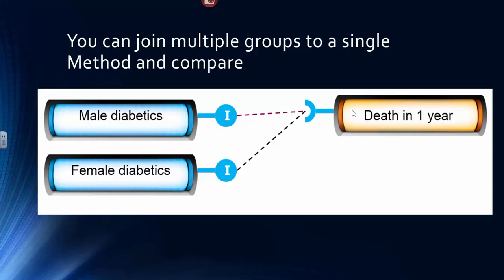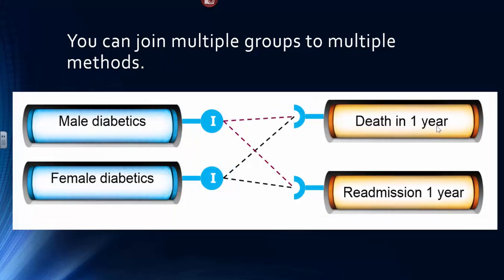So the method is to look at elapsed time for mortality up to a year out. You could have another method, which would be a readmission method, and there again, you'd apply that readmission to male diabetic admissions and female diabetic admissions to see who was readmitted in a year's time.